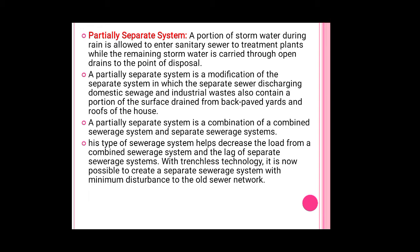A partially separate system is a combination of the combined sewage system and the separate sewage system. This type of sewage system helps decrease the load from a combined sewage system and the lag of a separate sewage system. With trenchless technology, it is now possible to create a separate sewage system with minimum disturbance to the old sewer network. This partial separate system is actually a modified system that is a combination of combined and separate sewage systems.